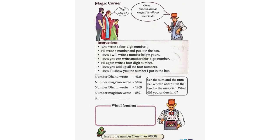Magic Corner. Hey, magic! Come, you can also do magic — I will tell you what to do. Instructions: You write a four-digit number. I will write a number and put it in the box. Then I will write a number below yours. Then you can write another four-digit number. I will again write a four-digit number. Then you add up all four numbers, and I will show you the number I put in the box.